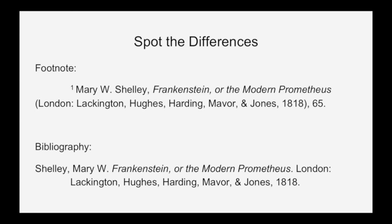Take a moment and see if you can spot the differences between the footnote to Shelley's book Frankenstein and its matching bibliography entry. You might notice that the indentation is different: footnotes use a first-line indentation, while bibliography entries use a hanging indent, where the first line is all the way to the left and any subsequent lines are indented a half inch. Additionally, footnotes present the author's name first name then last name, while bibliography entries are organized by last name, comma, first name. Generally, most of the punctuation has been replaced by periods — so instead of author, comma, title, parentheses, publication information, we now have author, period, title, period, publication information. Additionally, because we're citing the entire book and not just one page in the bibliography, you do not need to include page numbers for books.